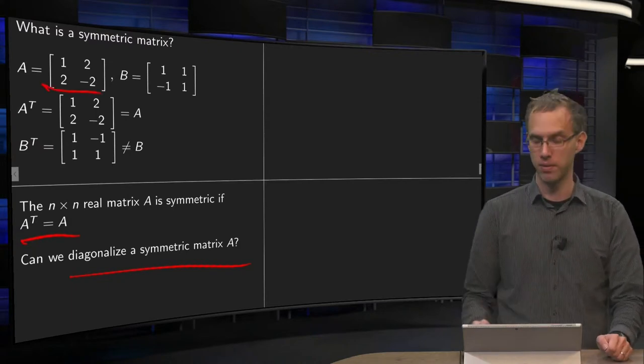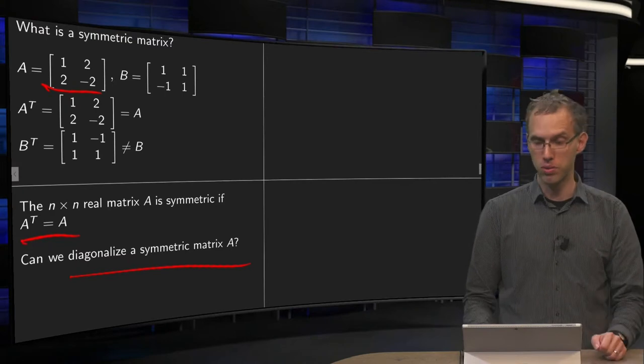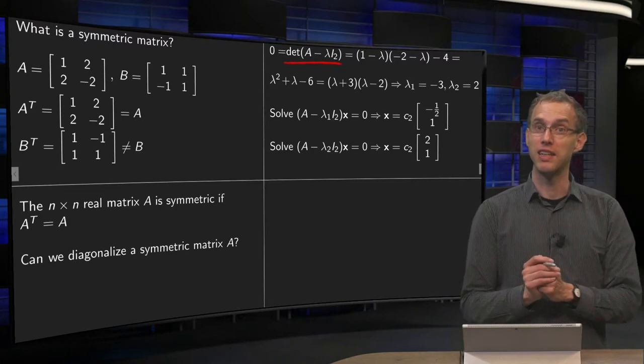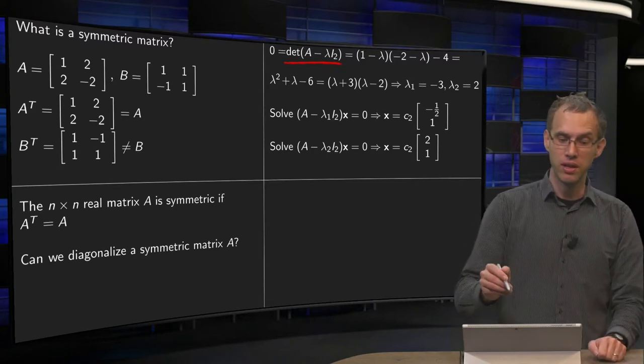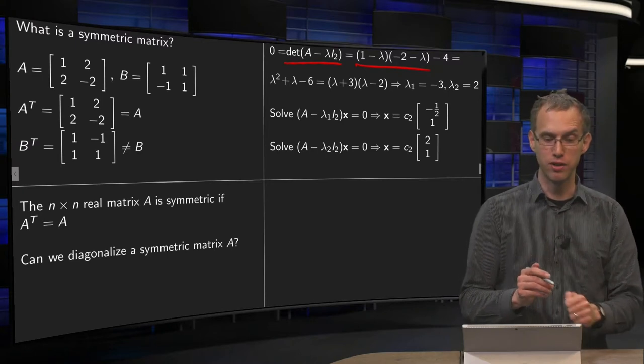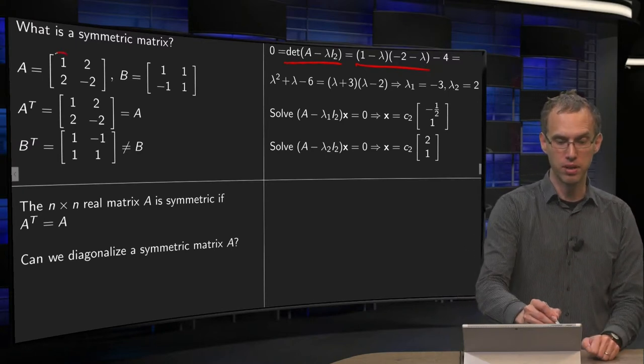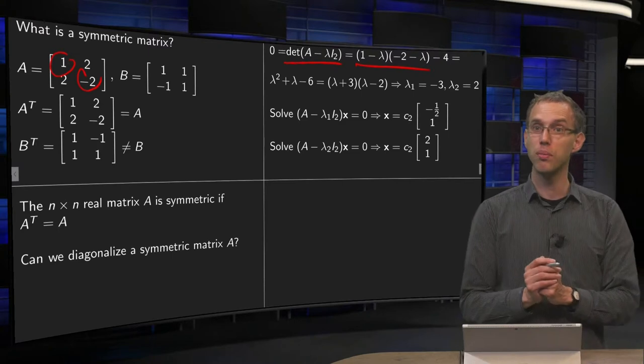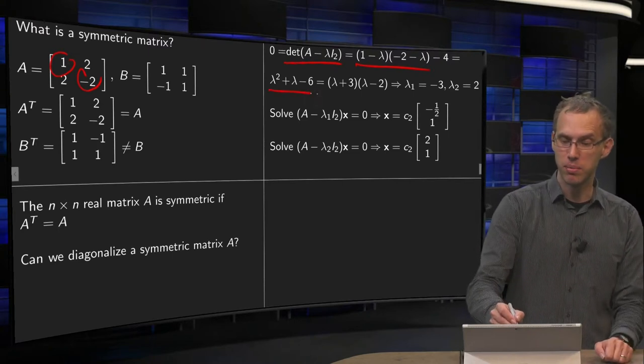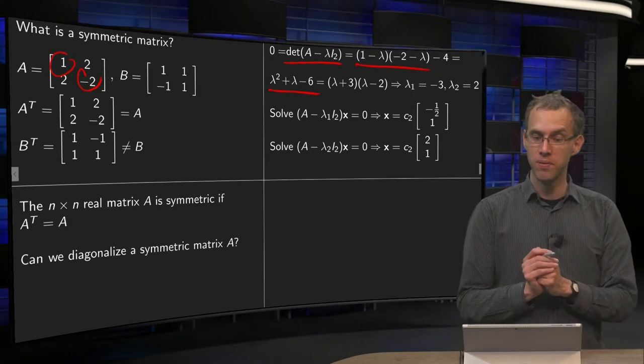So first of all we are going to compute the eigenvalues, so we have to compute the determinant of A minus lambda times I2, that will yield 1 minus lambda times minus 2 minus lambda minus 4. Add the minus lambda on the diagonal, compute the determinant, gives us the characteristic equation lambda squared plus lambda minus 6 equals 0.